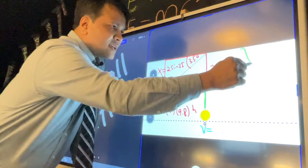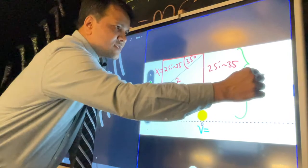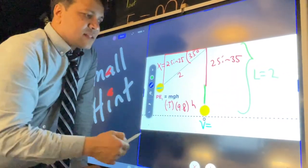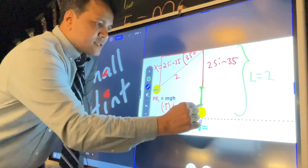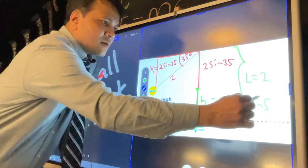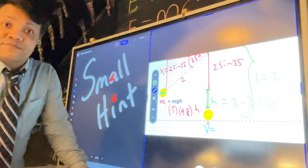Well, the whole thing is L, and L is 2. If the red one is 2 sine 35, what is the height? Let's call this one height. Height is well, 2 minus 2 sine 35. Okay, that gives you the height.